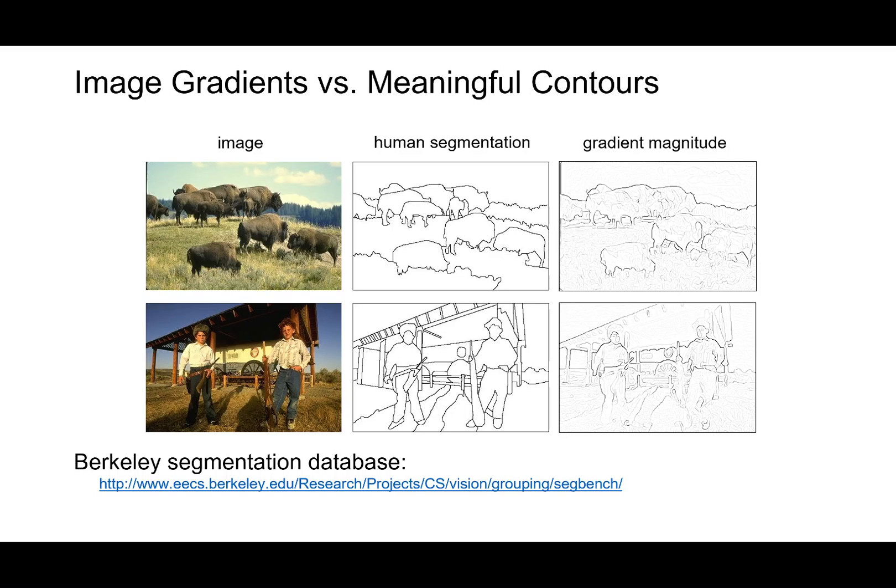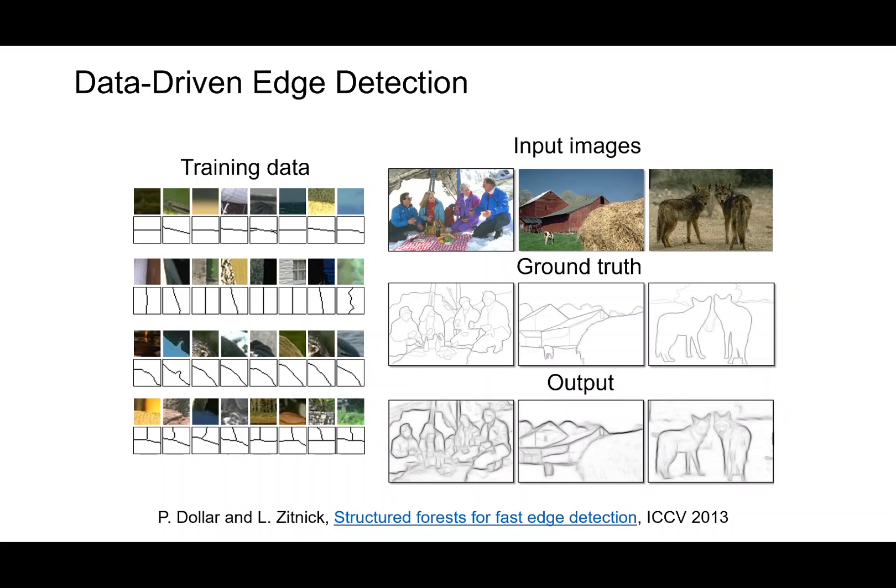There have been many contributions to edge detection. You can see these are the original images and these are the human segmentations ground truth. This is called Berkeley segmentation database. And then here you can see some algorithms what they have computed. And then in this 2013 ICCV paper, you can see the nice outputs.